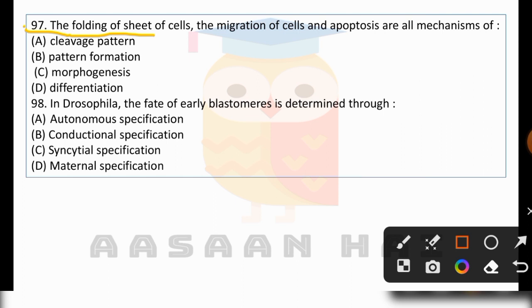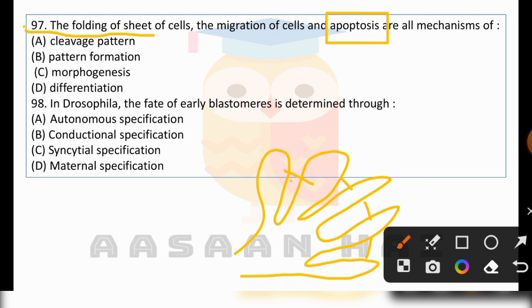Apoptosis, folding of cell sheets, and cell migration are all important mechanisms that form specific structures in humans, frogs, or chicken. These processes are all essential for morphogenesis.